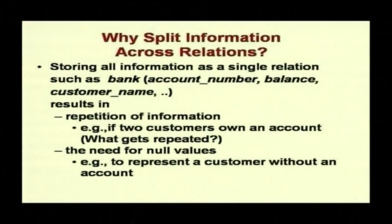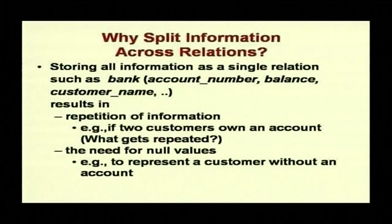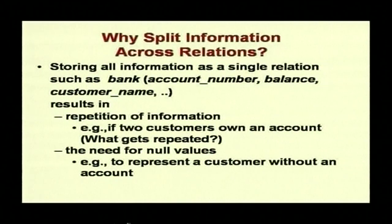The question arises: why can't we store everything in one relation? Storing all information as a single relation — bank, account number, balance, customer name, customer address — results first in repetition of information. If two customers own an account, data gets repeated. And sometimes a customer can be without an account, creating the need for null values. These are the two problems with not splitting information, so you should do the correct split.